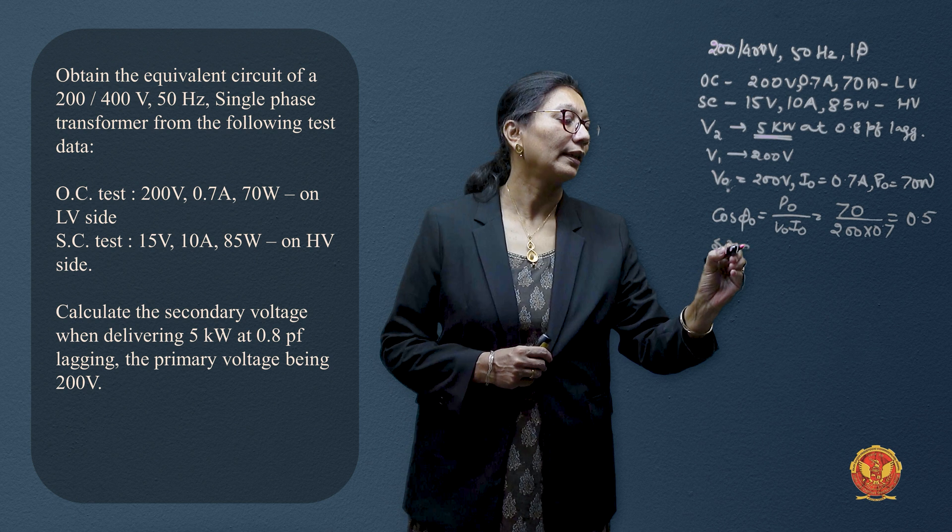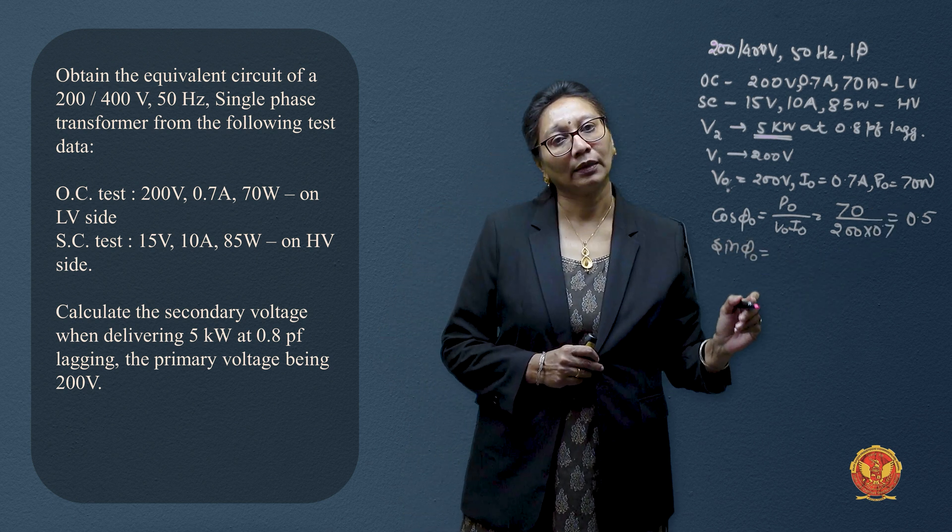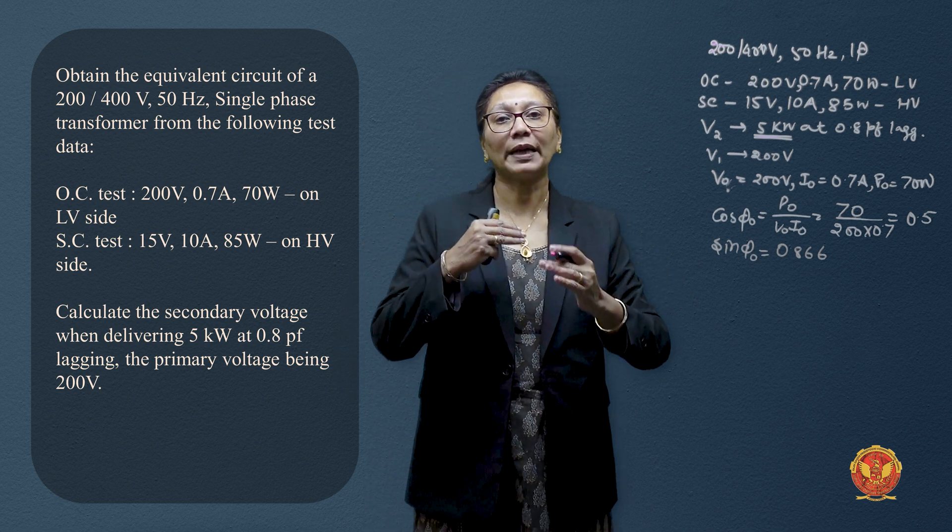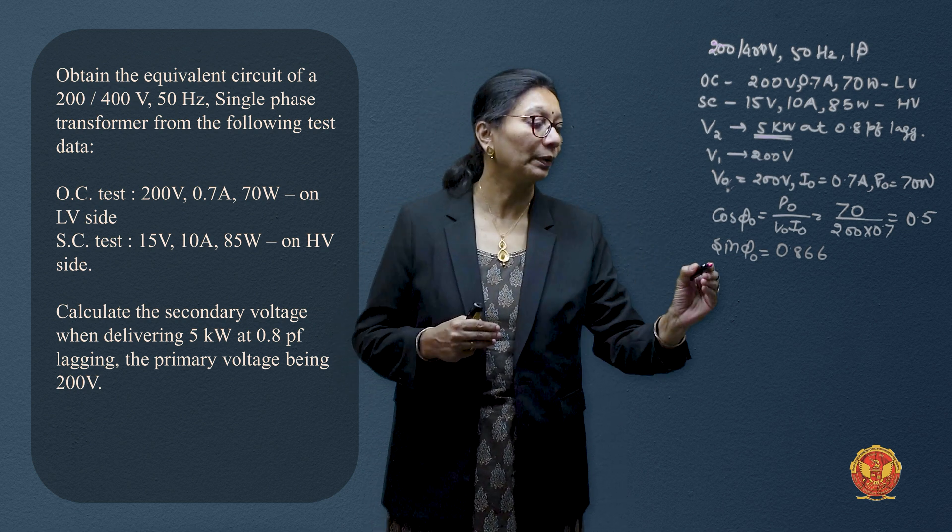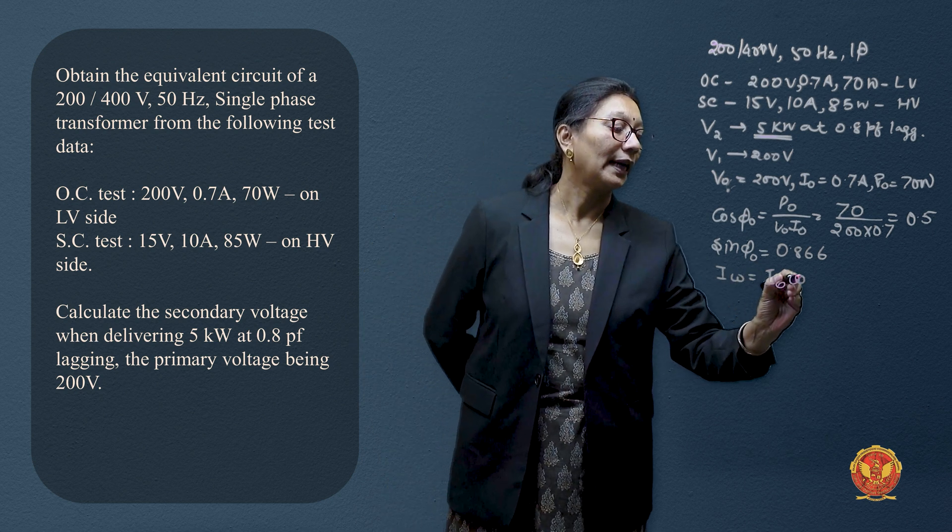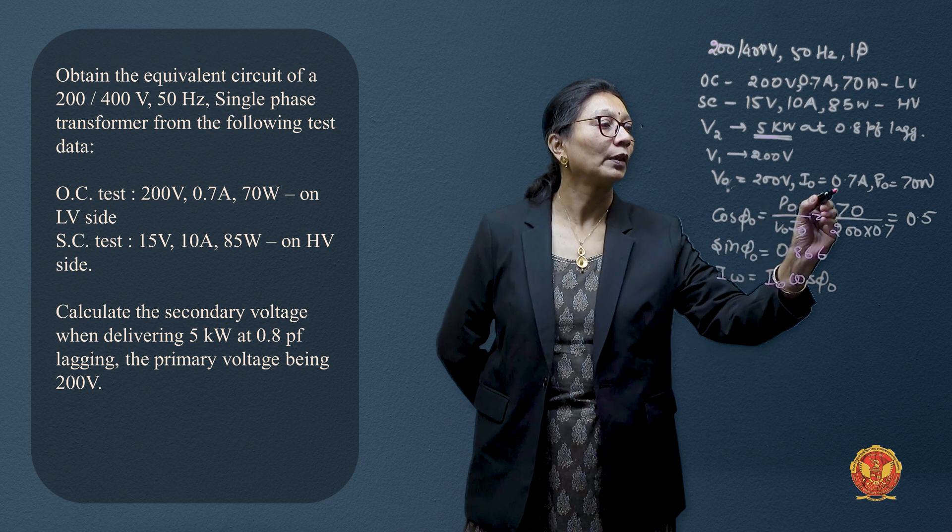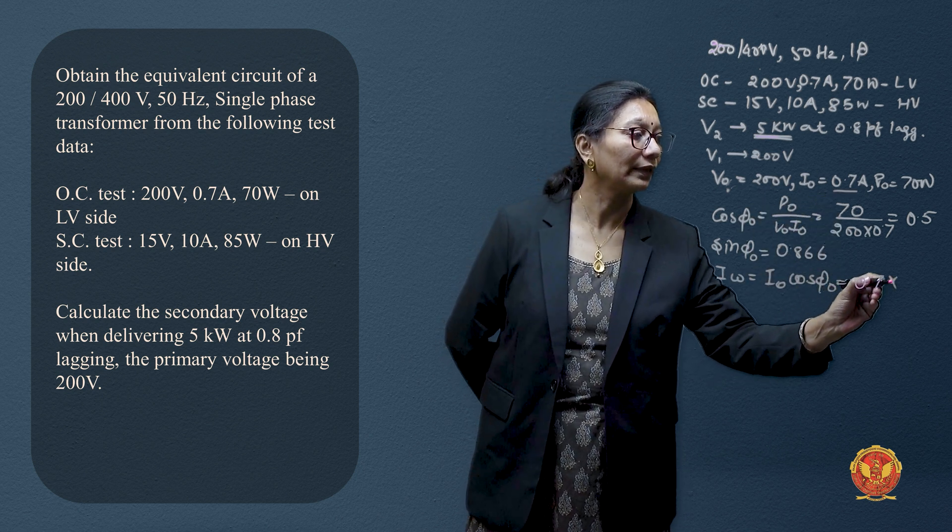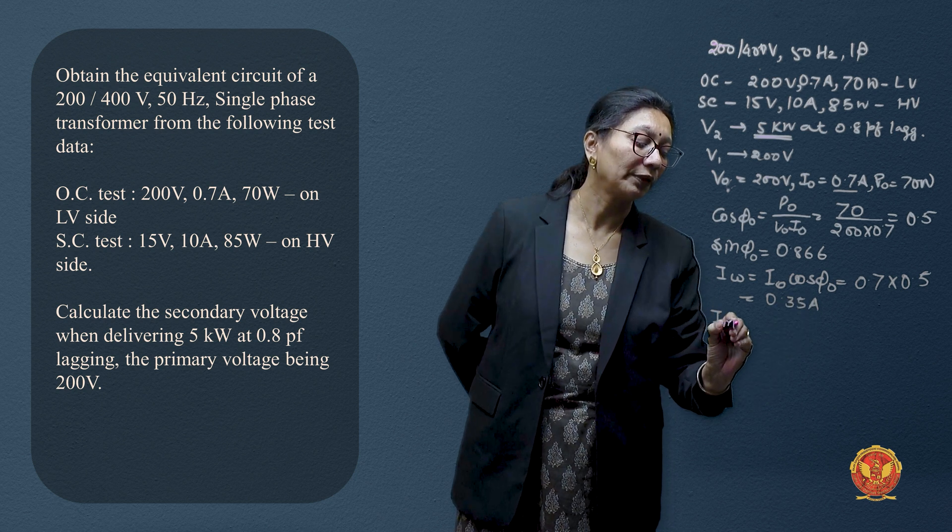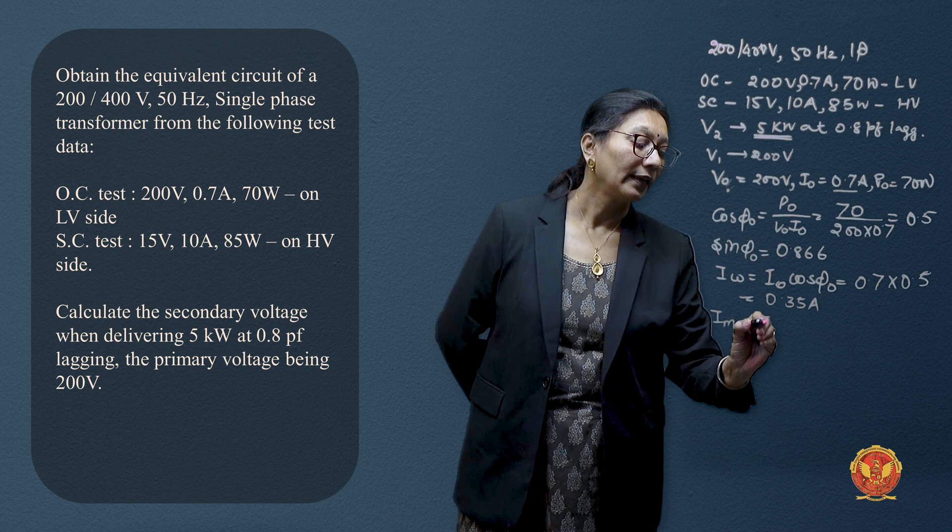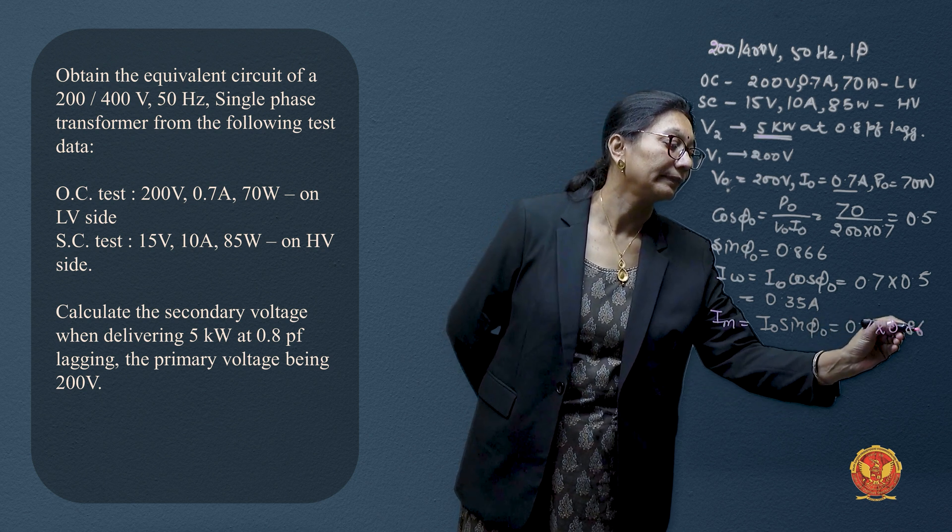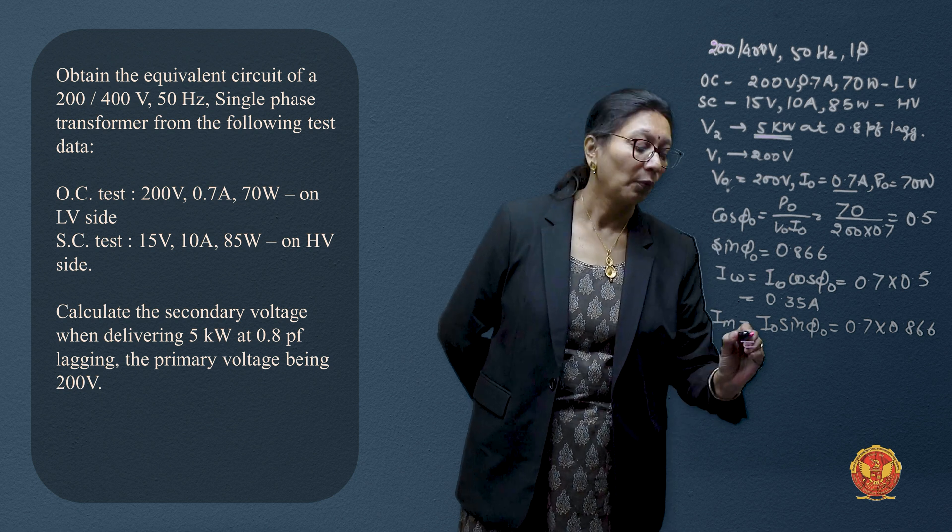If we want to find sine phi, then sine phi would be cos inverse of this. Whatever angle comes, its sine is 0.86. Now we have both magnetizing components in the current value. The current flowing in the resistive component will be 0.7 into 0.5 as 0.35 amperes. Similarly magnetizing component will be 0.7 into 0.866 and it gives value of 0.606 amperes.